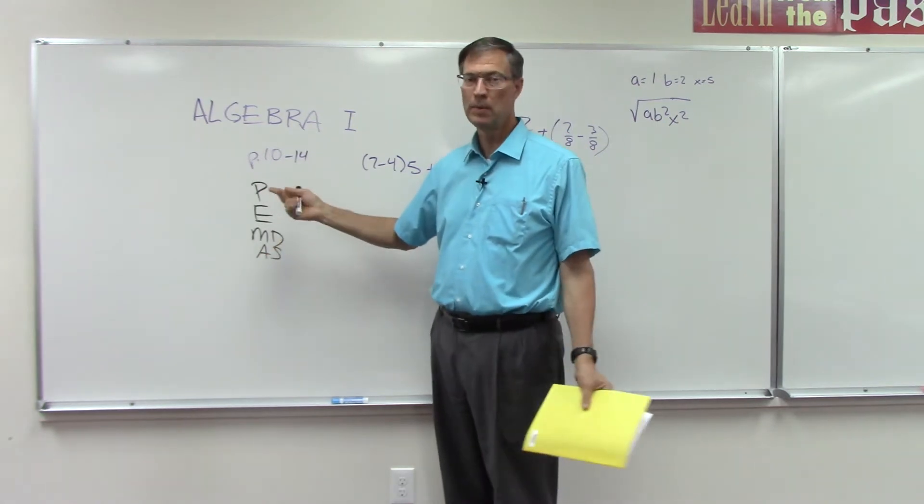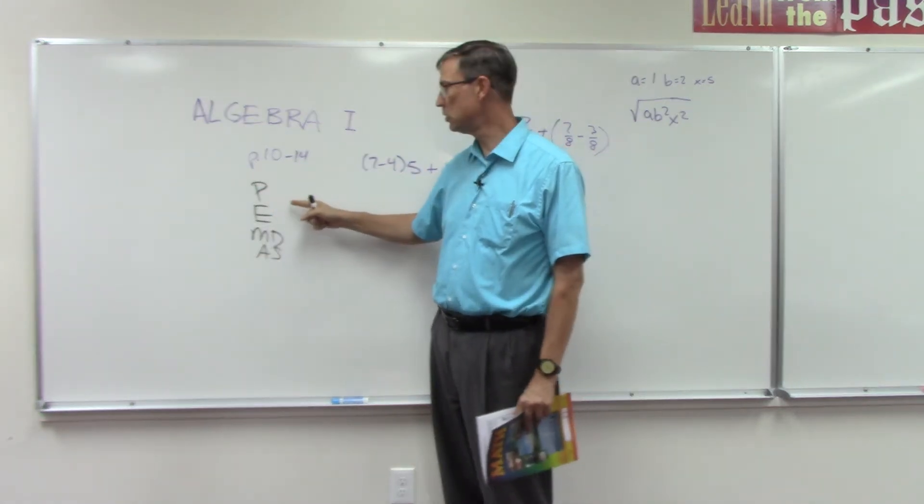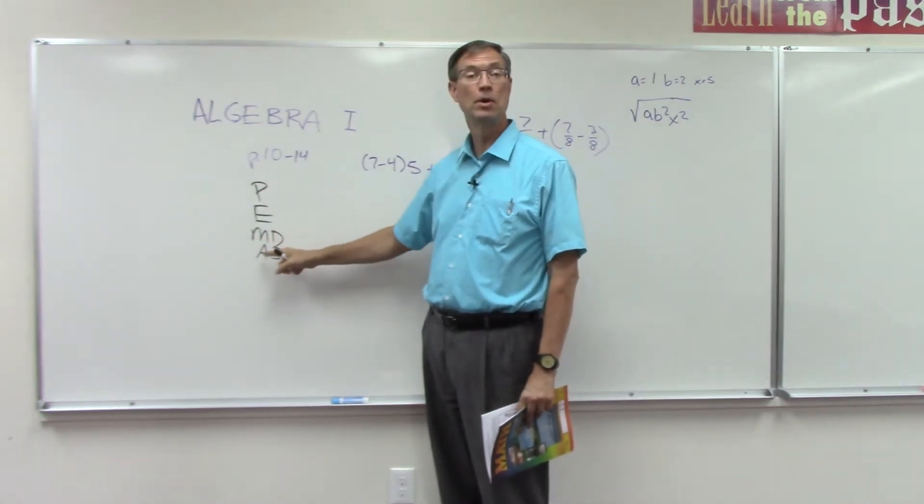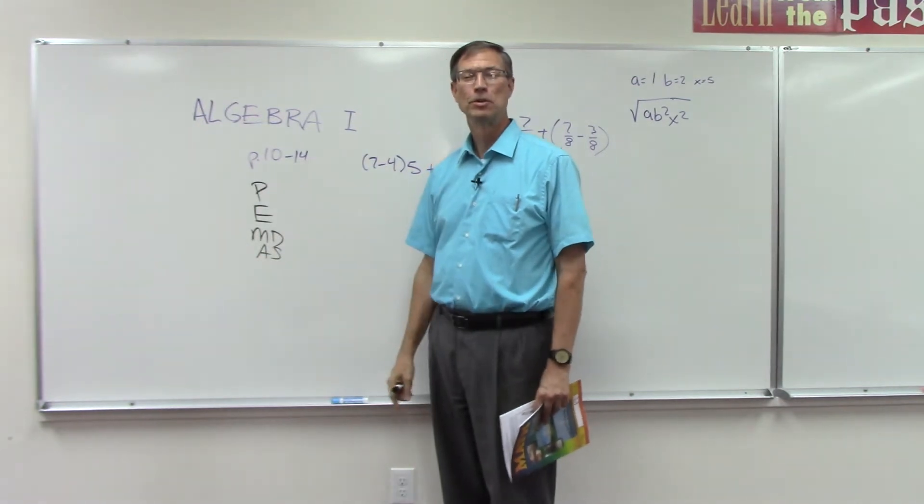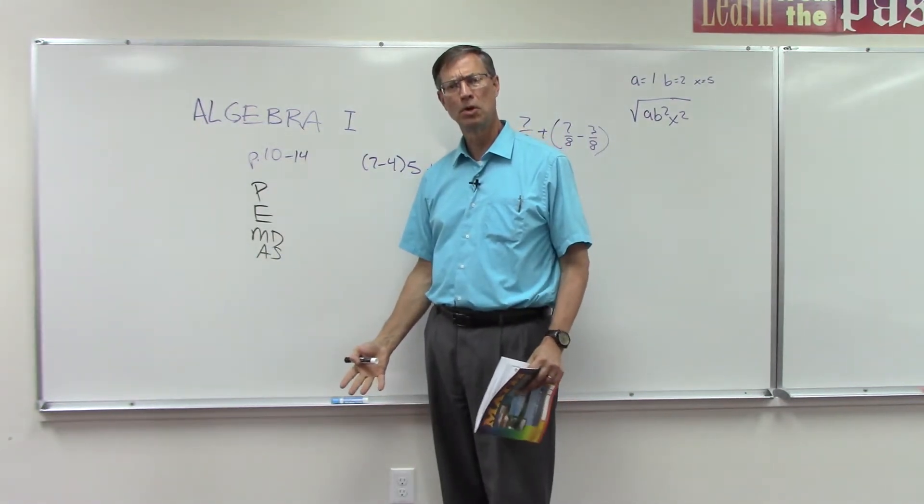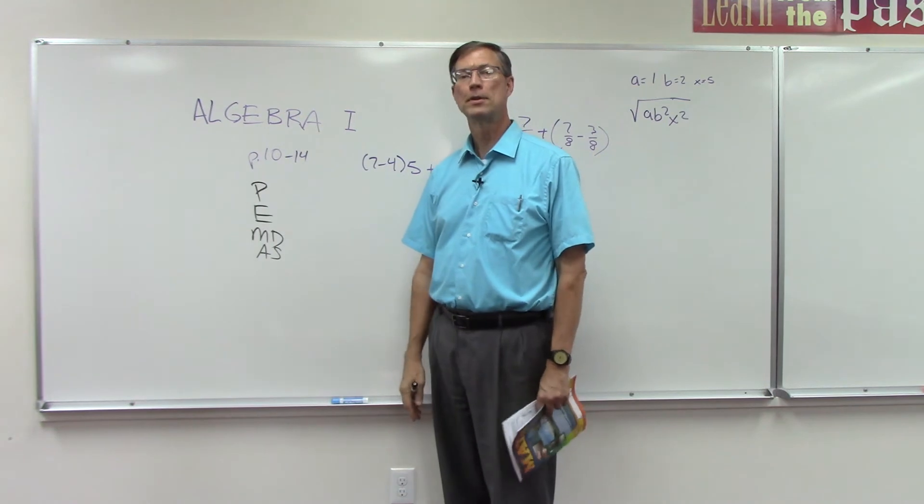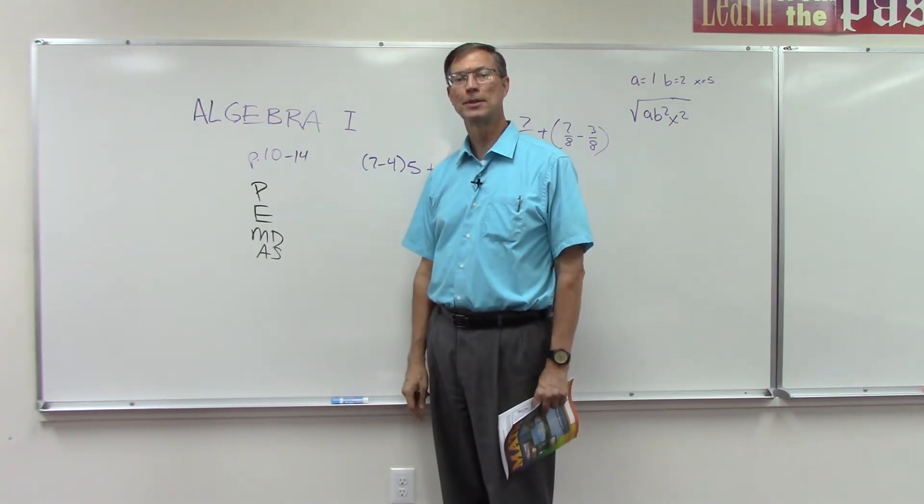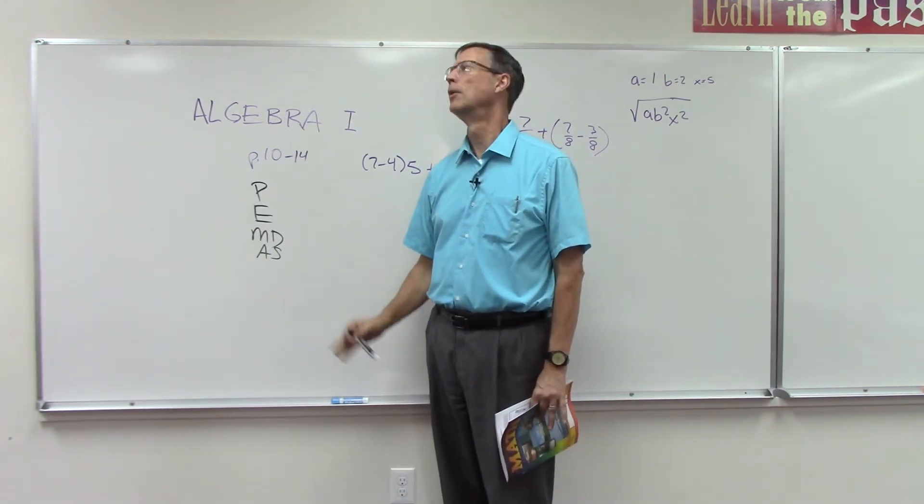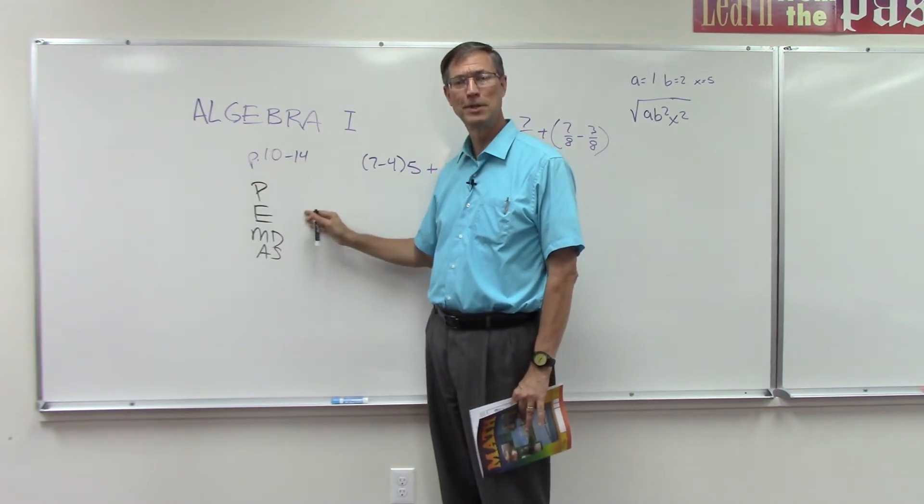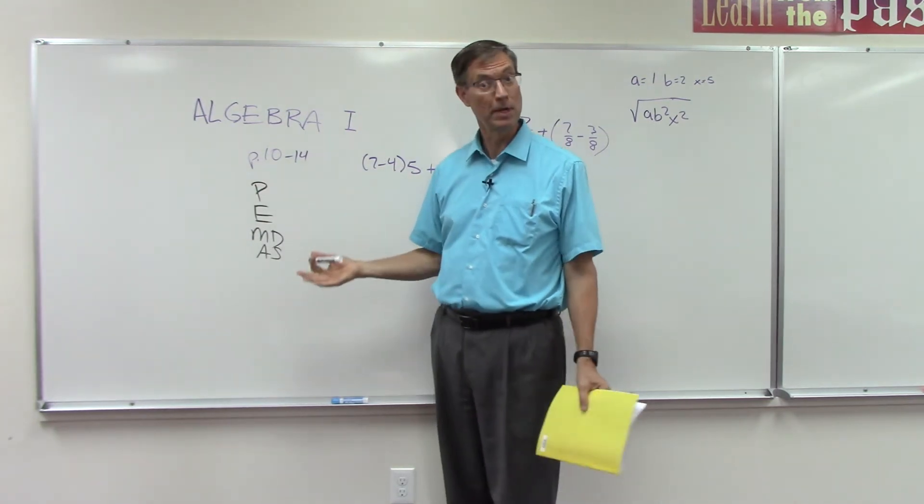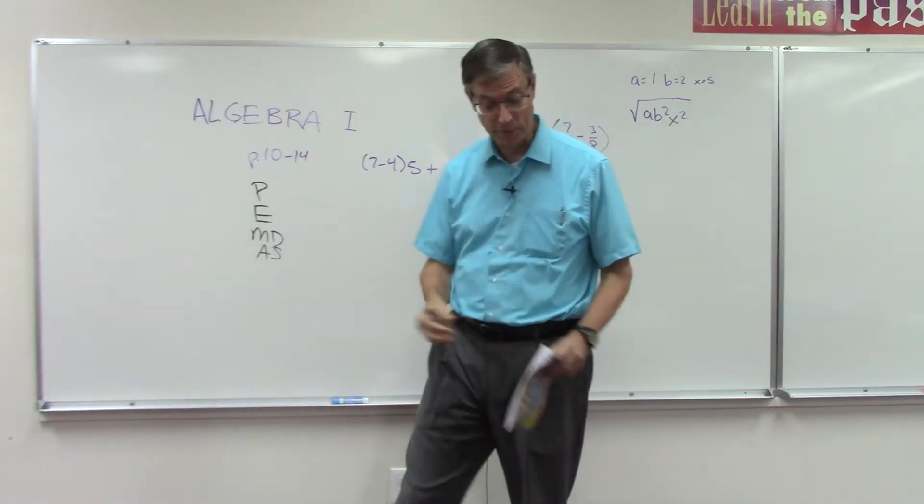Last thing is only addition and subtraction. So the way we keep track: please excuse my dear Aunt Sally. So you picture some frumpy woman with a straw hat, and she's doing weird antics, and you just say, please excuse my dear Aunt Sally. Maybe you have an Aunt Sally and you can picture somebody different.